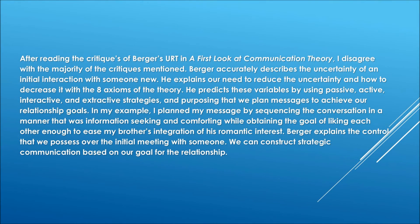After reading the critiques of Berger's URT in 'A First Look at Communication Theory,' I disagree with the majority of the critiques mentioned. Berger accurately describes the uncertainty of an initial interaction with someone new. He explains our need to reduce uncertainty and how to decrease it with the eight axioms of the theory. He predicts these variables by using passive, active, interactive, and extractive strategies, also proposing that we plan messages to achieve our relationship goals. In my example, I planned my message by sequencing the conversation in an information-seeking and comforting manner, obtaining the goal of liking each other enough to ease my brother's integration of his romantic interest. Berger explains the control that we possess over the initial meeting with somebody — we can construct strategic communication based on our goal for the relationship.